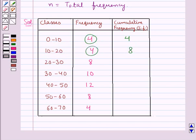Now similarly, we will find the cumulative frequency for class 20 to 30, which is 8 plus 8, which is 16. Then, cumulative frequency for class 30 to 40 is 10 plus 16, which is 26.